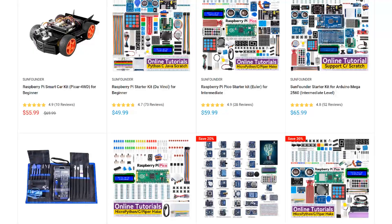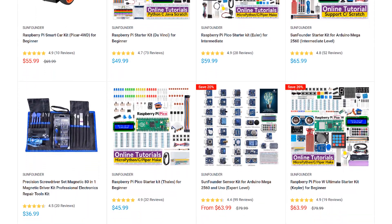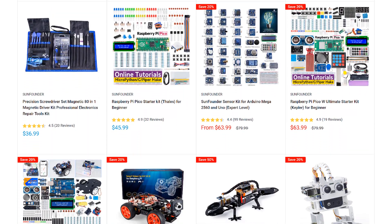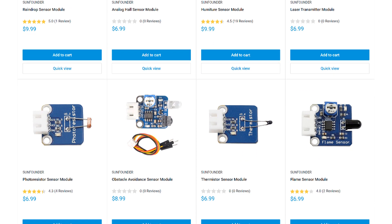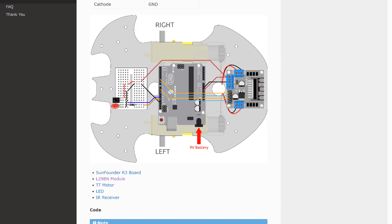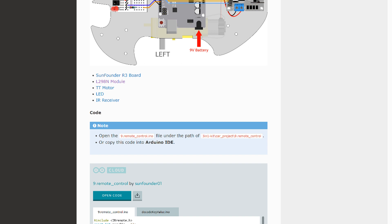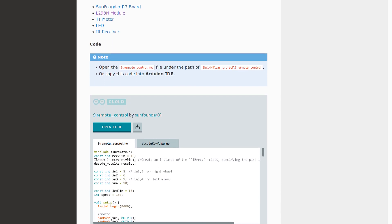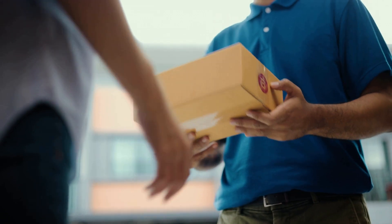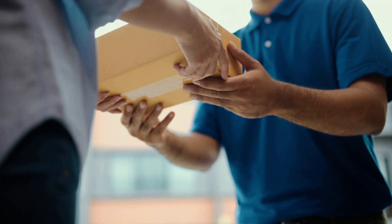SunFounder is my go-to source for sensors, modules, and other parts for the Arduino and Raspberry Pi. They have a huge selection of STEM, robotics, and IoT kits, and lots of useful sensors and modules. Every product has an online tutorial with wiring diagrams and example code. They also offer free shipping on all orders, with no minimum. Give them a try at www.sunfounder.com next time you need to order some parts.